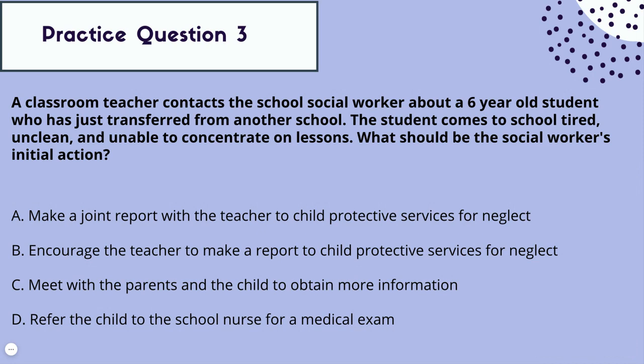Let's break down this question. Our role: we are a school social worker, setting is a school building. Our client: referred by a teacher regarding concerns for a six-year-old student. Age matters because you want to think about what's appropriate for a child of that age — and this is a minor, so keep that in mind. Other information: the classroom teacher contacted us, this student is new to the school, having just transferred, and the concerns are the student is tired, unclean, and unable to concentrate. The question asks for the social worker's initial action — what should the social worker do first.